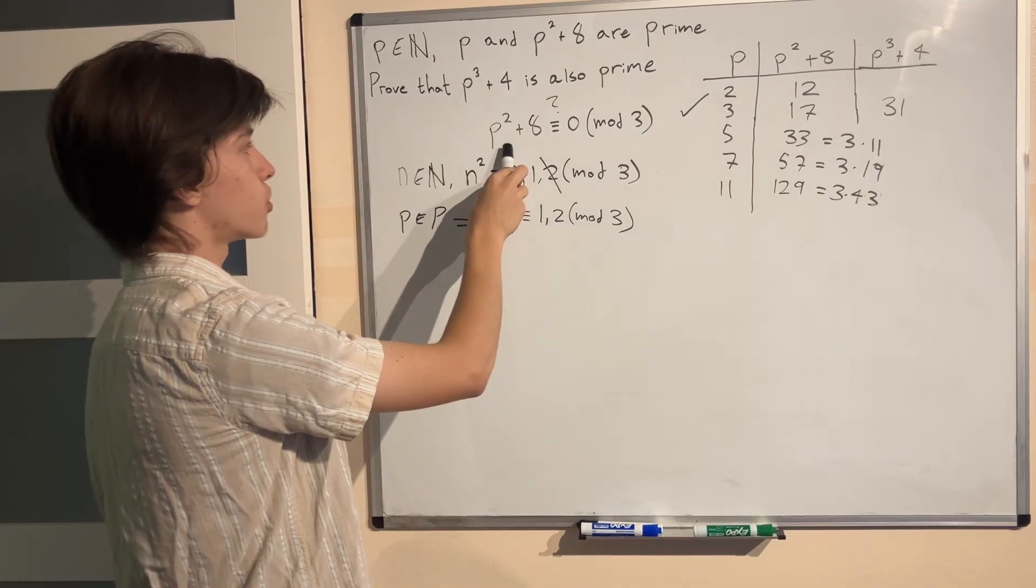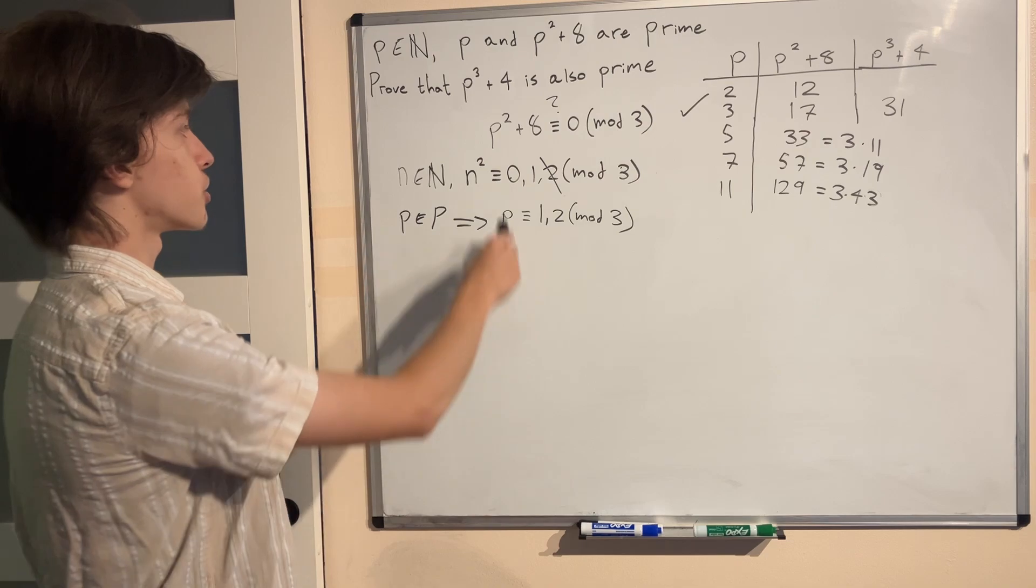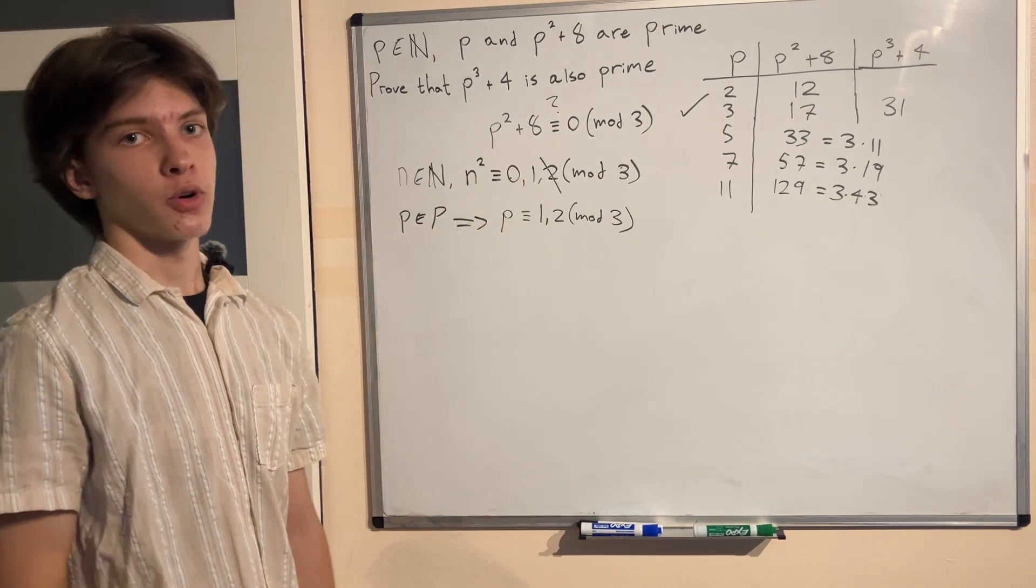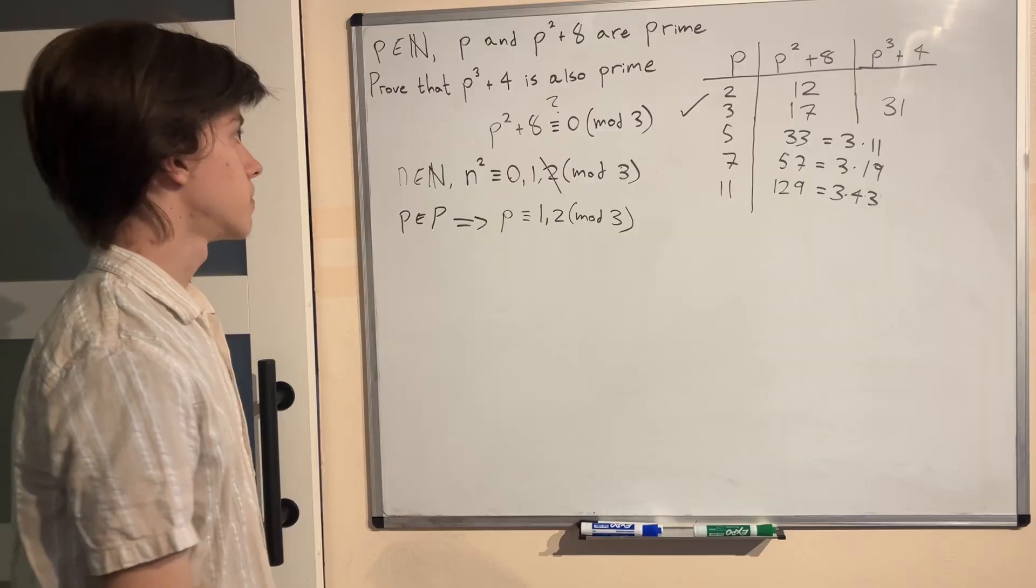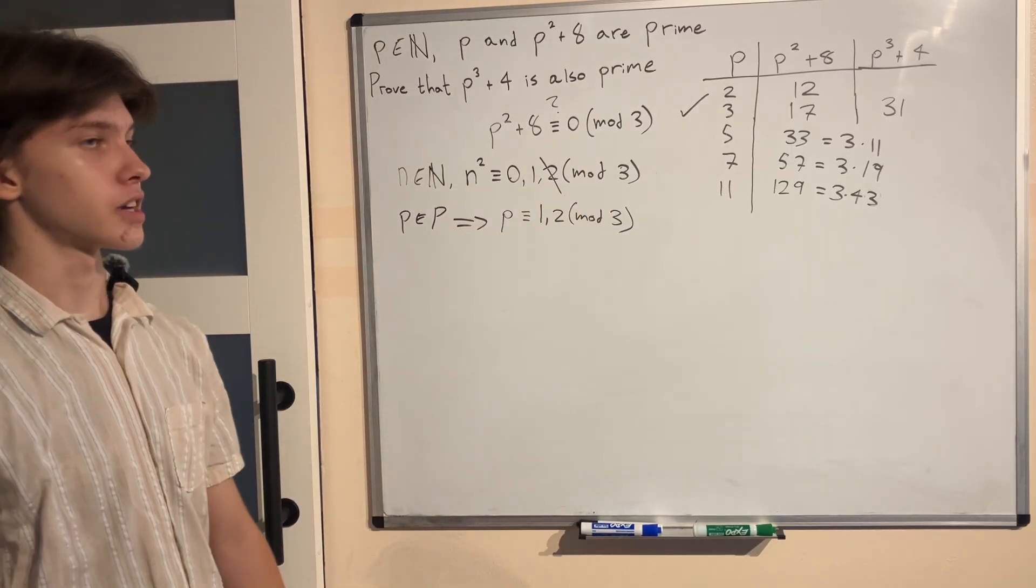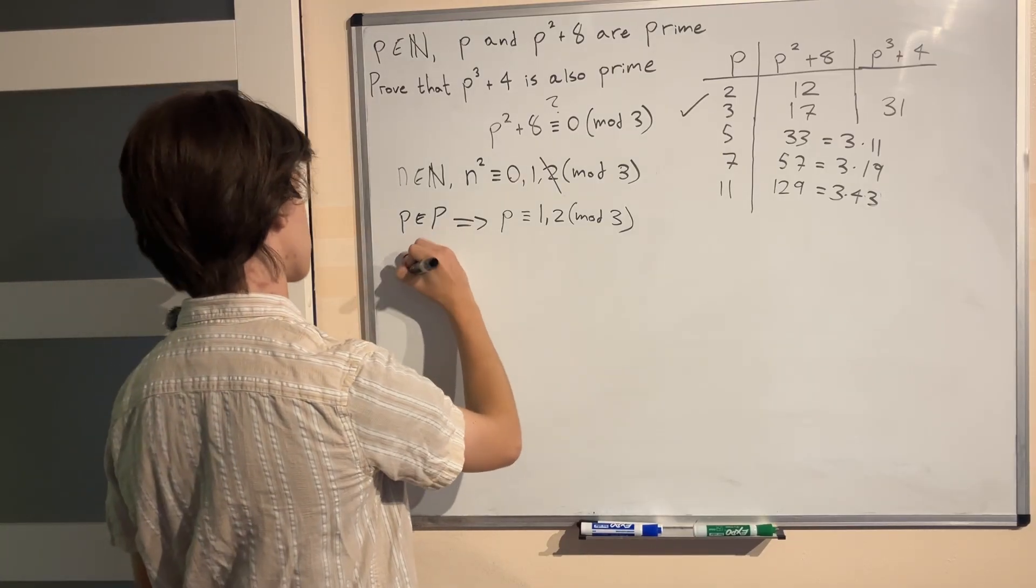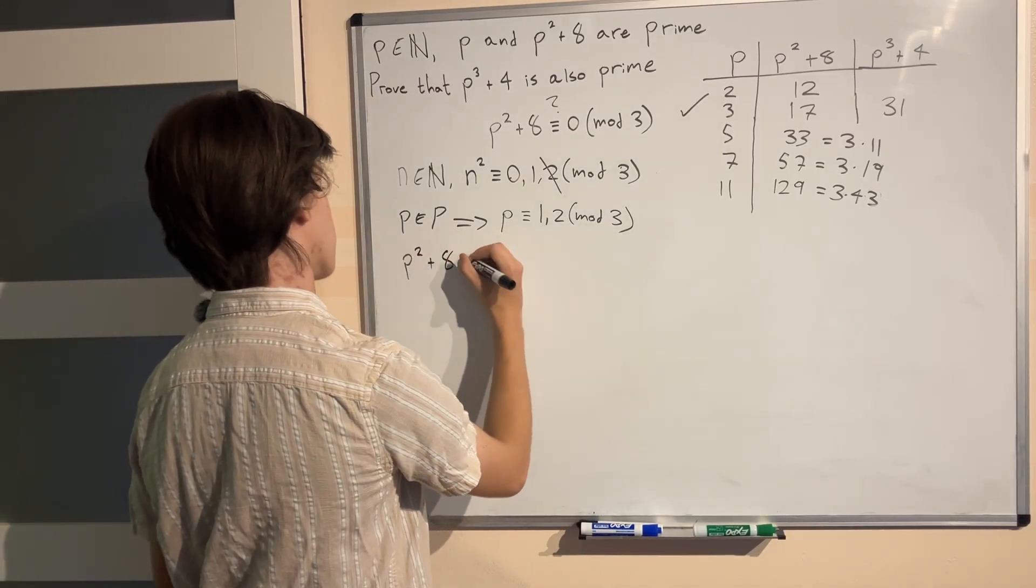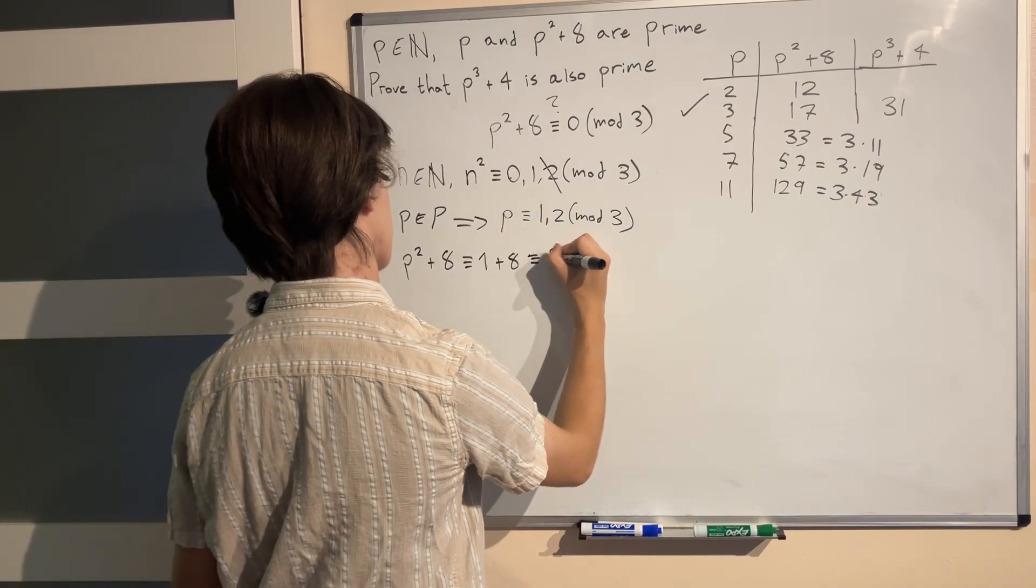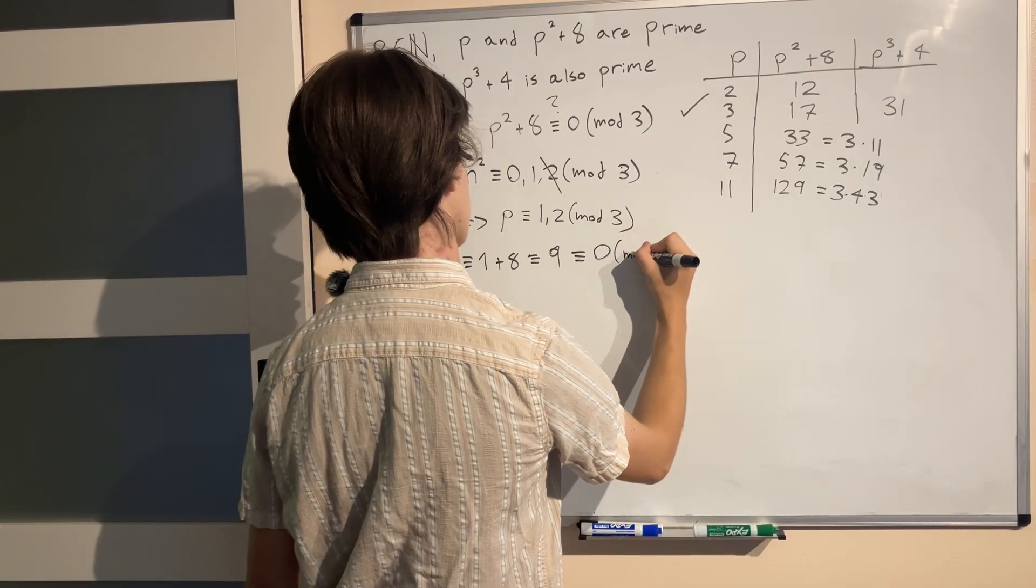So now we know that p is congruent to either 1 or 2 mod 3. We know that p² is only going to be congruent to 1 mod 3 because its possible values are 0 or 1 and these intersections are only 1 itself. So we know that now in mod 3 this p² is p² for prime p specifically will be 1. So we know that p² + 8 in mod 3 is congruent to 1 + 8 which is congruent to 9 which is congruent to 0 mod 3.